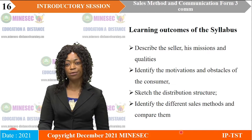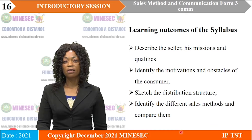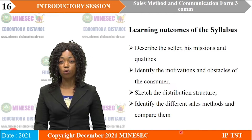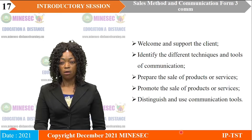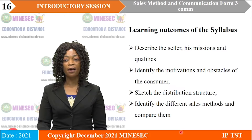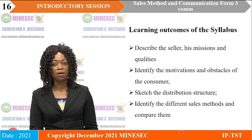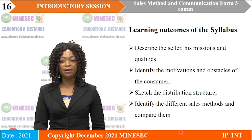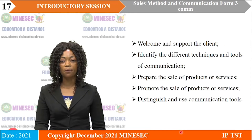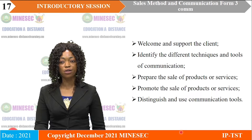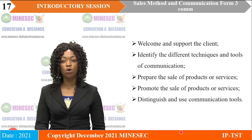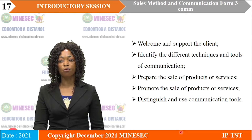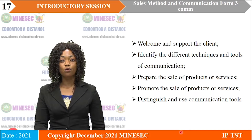Learning outcomes of the syllabus. Students, after this course, will be able to describe the seller, his missions and qualities; identify the motivations and obstacles of the consumer; understand the distribution structure; identify the different sales methods and compare them; welcome and support the client; identify the different techniques and tools of communication; prepare the sale of products or services; promote the sale of products or services; and distinguish and use communication tools.